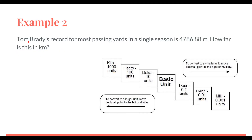Example two: Tom Brady's record for most passing yards in a single season is 4,786.88 meters — how far is this in kilometers? We're going from meters to kilometers. Meters don't appear labeled on the staircase because meters are the basic unit, so we start at the basic unit position and move to kilo, up to the left.